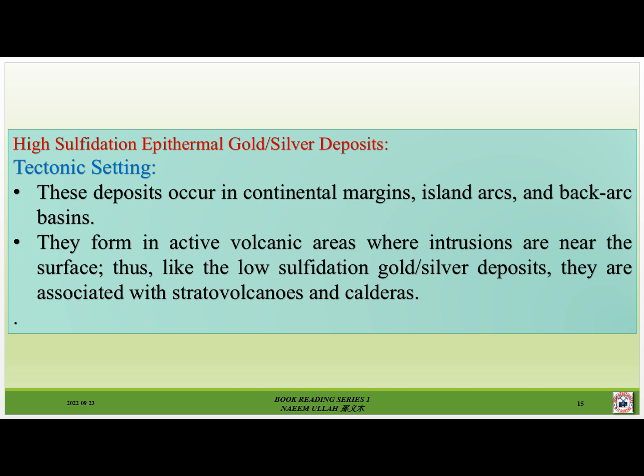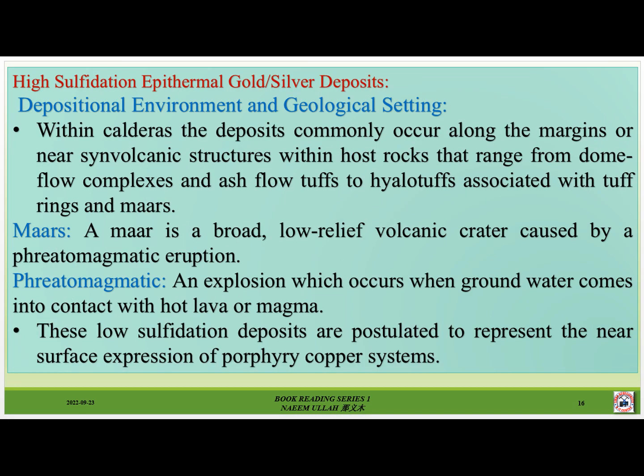High sulfidation deposits occur in continental margins, island arcs and back-arc basins. They form in active volcanic areas where intrusions are near the surface. Thus, like the low sulfidation gold-silver deposits, they are associated with stratovolcanoes and calderas. Depositional environment and geological setting: within calderas, the deposits commonly occur along the margins or near syn-volcanic structures within host rocks. They range from dome-flow complexes and ash-flow tuffs to hyaloclastite tuffs associated with tuff rings and maars.